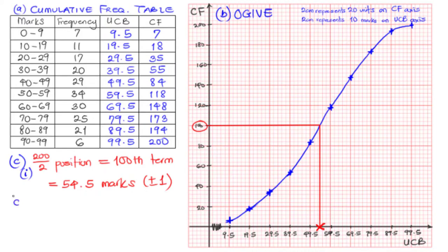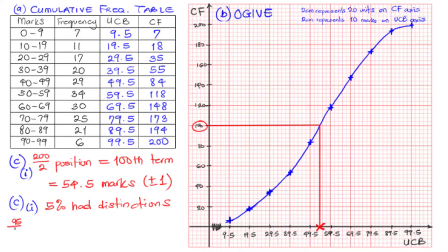Now for the second part: if 5% of the students passed with distinction, we need to find the least mark for distinction. If 5% got distinction, that means 95% did not. So 95 over 100 of 200 gives us the position: 95 times 2 equals 190 — so it is the 190th term. Wait — it is the 190th term, which corresponds to the least mark for a student to earn distinction.